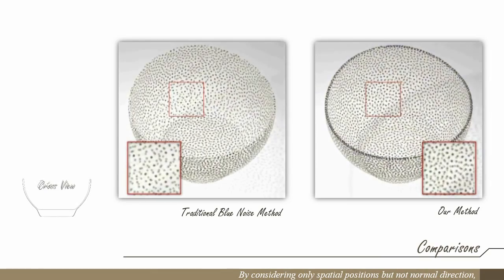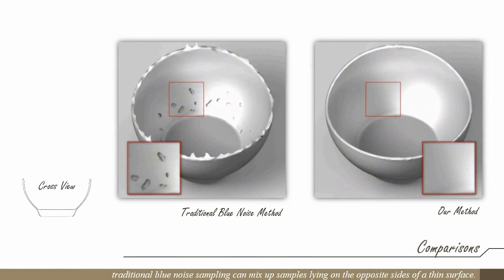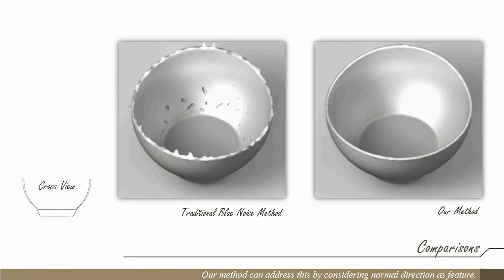By considering only spatial positions but not normal direction, traditional blue noise sampling can mix up samples lying on the opposite sides of a thin surface. Our method can address this by considering normal direction as a feature.